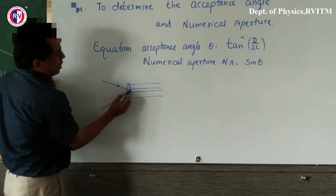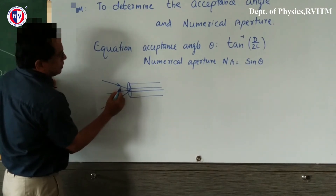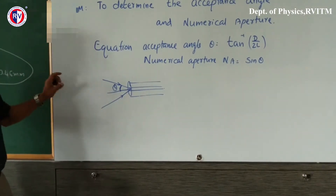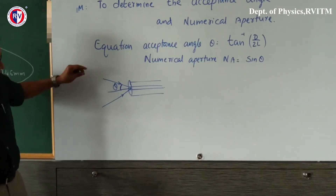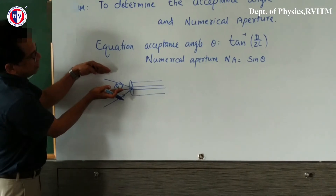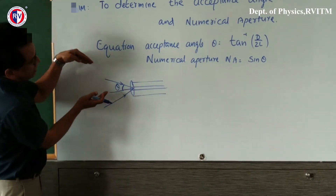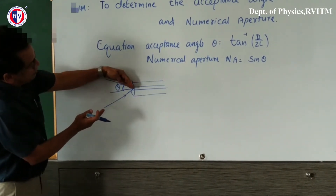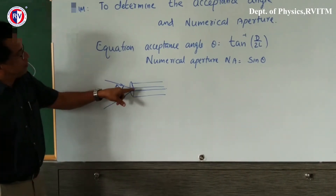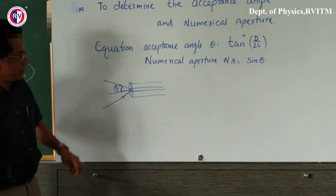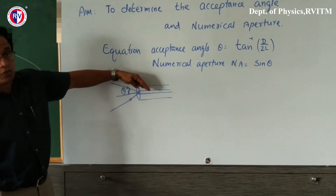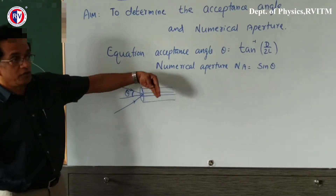This angle is called the acceptance angle theta. We have to measure the angle between the axis of the optic fiber and the point where the ray enters, for which we get total internal reflection. After this angle, if the ray is falling outside, you will not get total internal reflection and the ray will be lost. So the ray should always be falling within this cone.